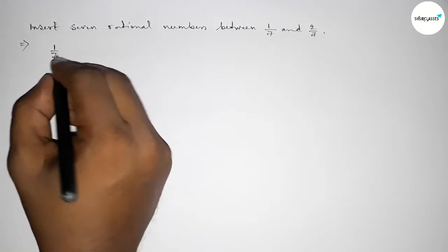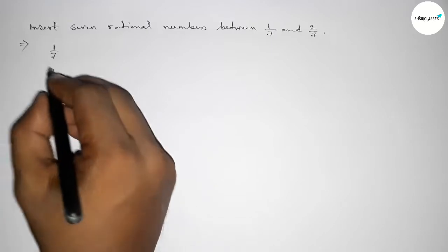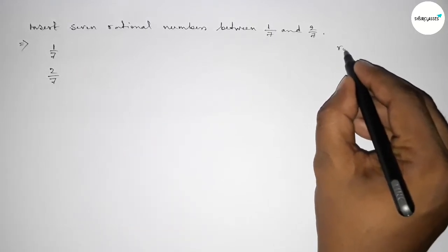Here given two numbers 1/7 and 2/7, and here the denominator of both are same.